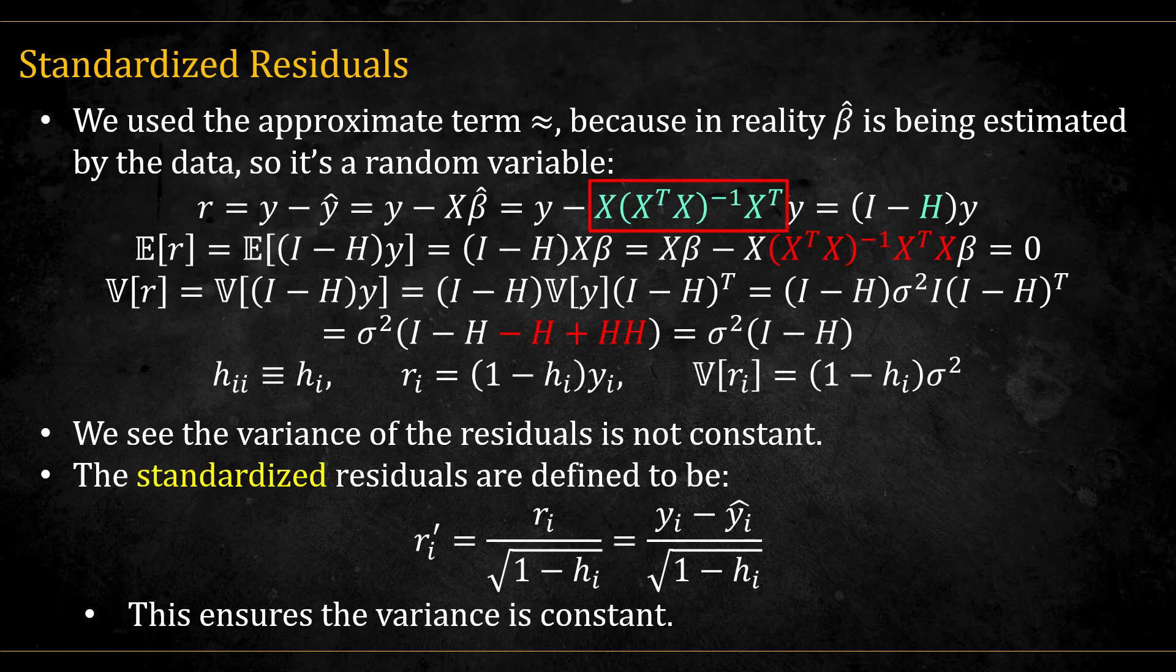Note that this matrix is called the hat matrix, because it puts the hat on y, and so we denote it by h. It is an idempotent matrix. The diagonals of this matrix, denoted by hi, are called the leverages. We'll get back to these soon.